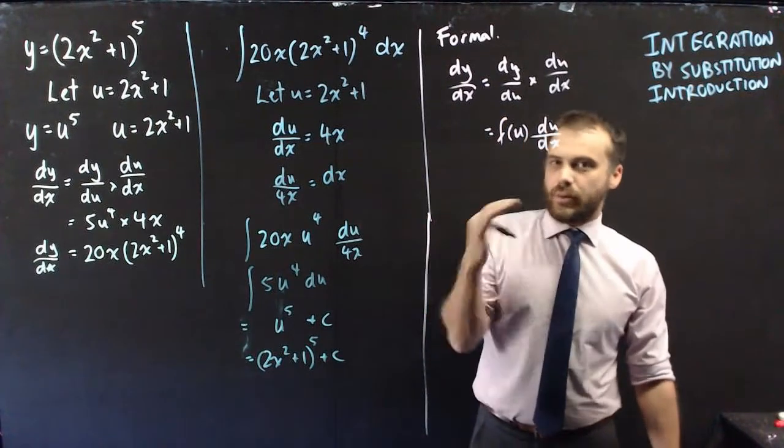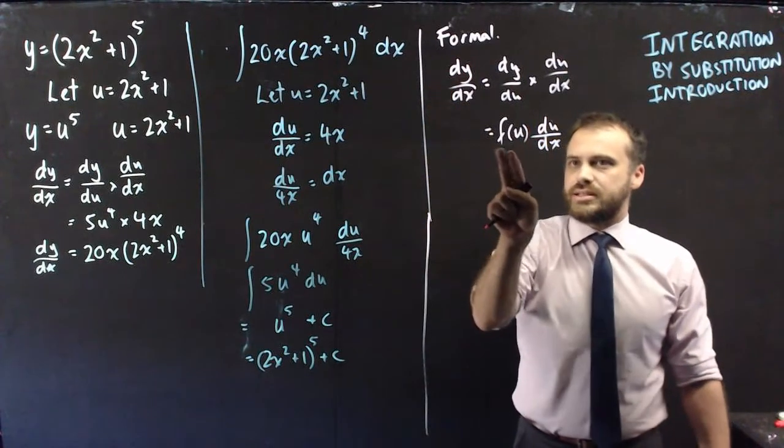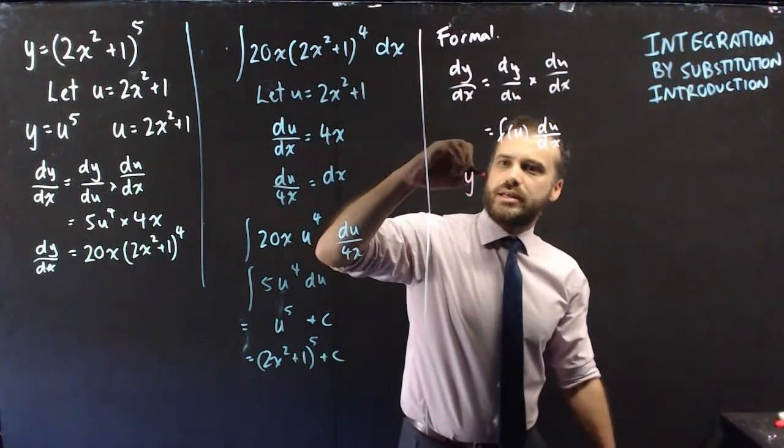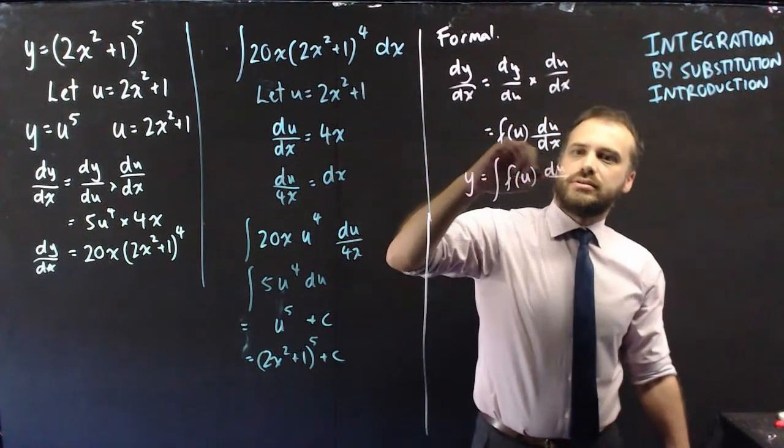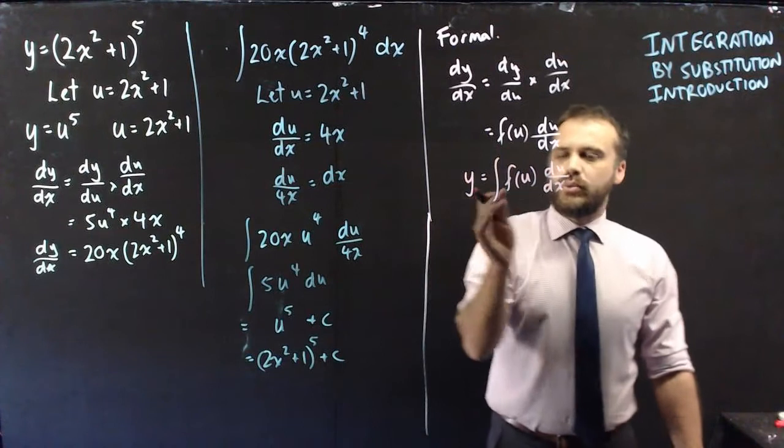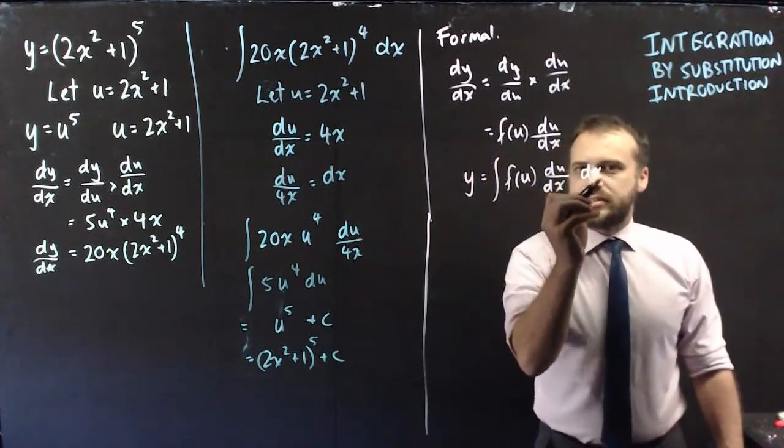Because derivatives and integrals are opposites, if we're saying that the derivative of y with respect to x is equal to this, then that means that y itself will be equal to the integral of this whole thing with respect to x.